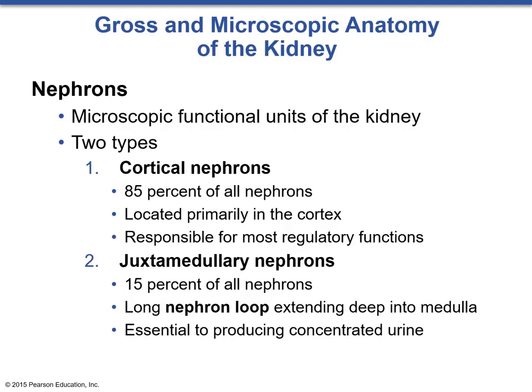Now that we've finished with gross anatomy, we can look at the microscopic anatomy and the primary functional unit of the kidney — the nephron. Nephrons come in two types. Cortical nephrons make up 85% of all nephrons and are located primarily in the cortex; these serve most regulatory functions for filtering blood and regulating pH and ion concentration. The remaining 15% are juxtamedullary nephrons, which have a longer loop extending deeper into the medulla. This longer loop is essential in producing concentrated urine, which is very useful during dehydration.